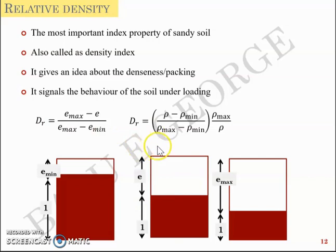In terms of density it is equal to (ρ - ρmin)/(ρmax - ρmin) × (ρmax/ρ). This is a representation using void ratio and this is a representation using density. Higher the void ratio lesser will be the density, or Emax will correspond to ρmin and Emin will correspond to ρmax.